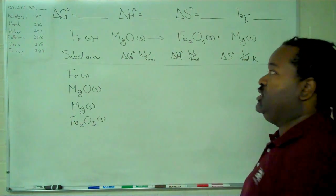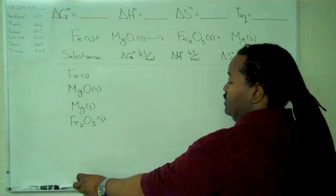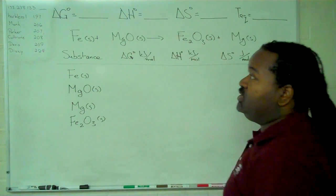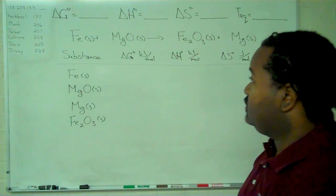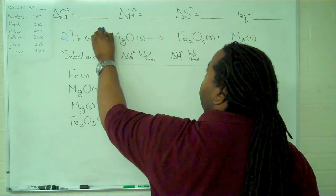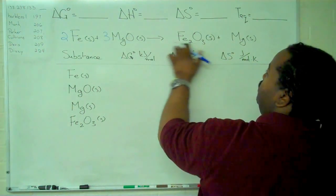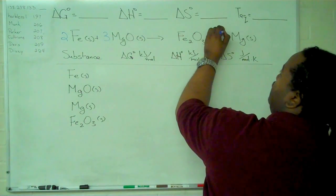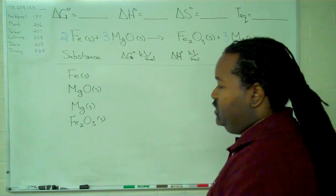So the first thing we have to do is verify that we have a balanced reaction, and in this case we do not. So in order to balance this, we'll need a 2 here, a 3 here, we only need one of the iron 3 oxide, and we need 3 of our magnesiums.